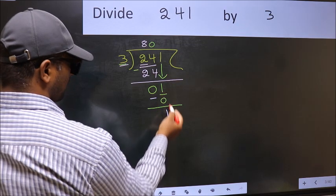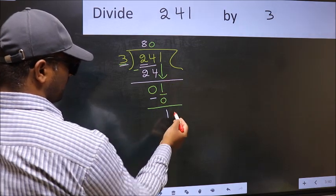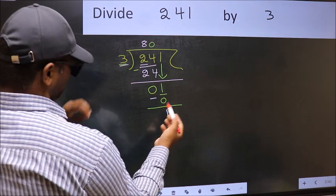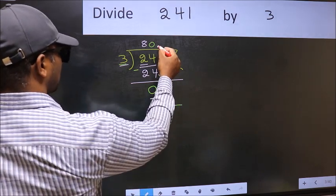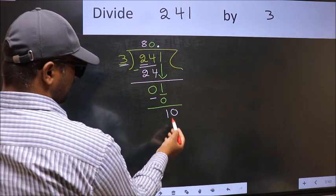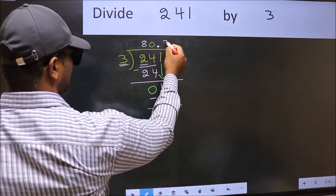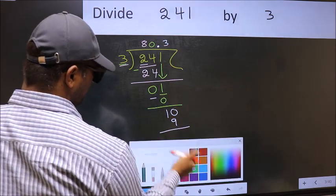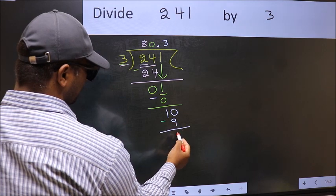Over here, we did not bring any number down. And 1 is smaller than 3. So, now we can put a dot and take 0. So, 10. A number close to 10 in 3 table is 3 threes, 9. Now, you should subtract. 10 minus 9, 1.